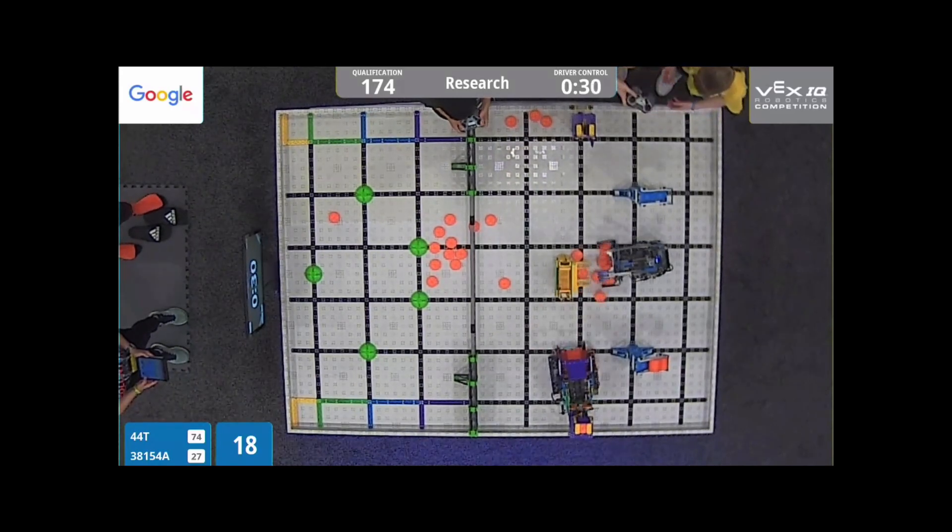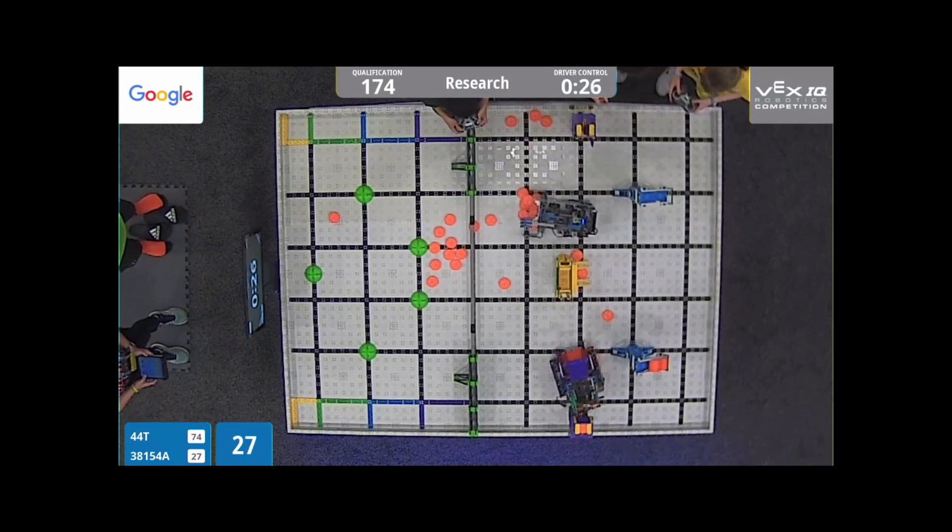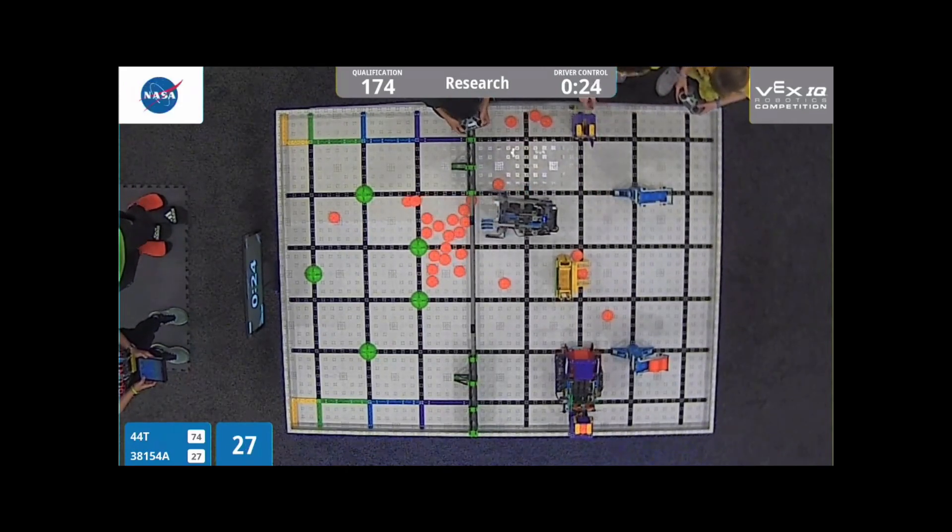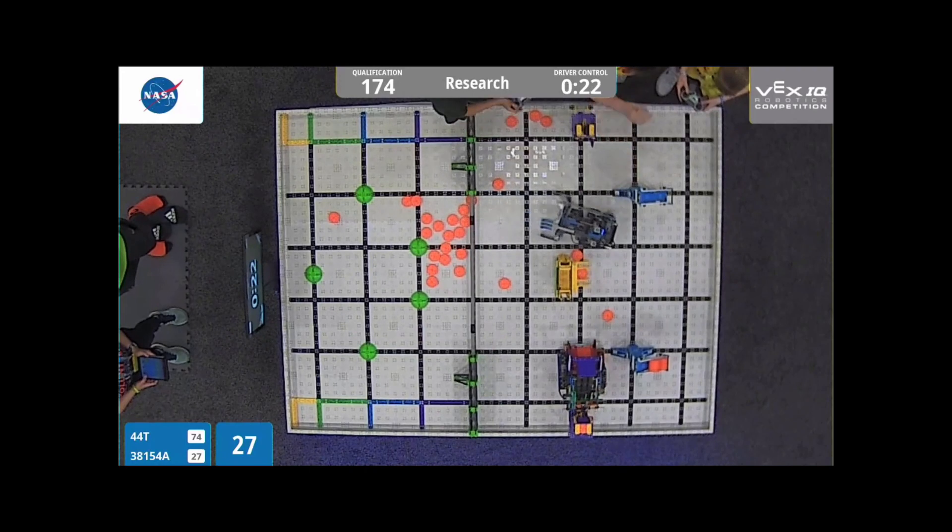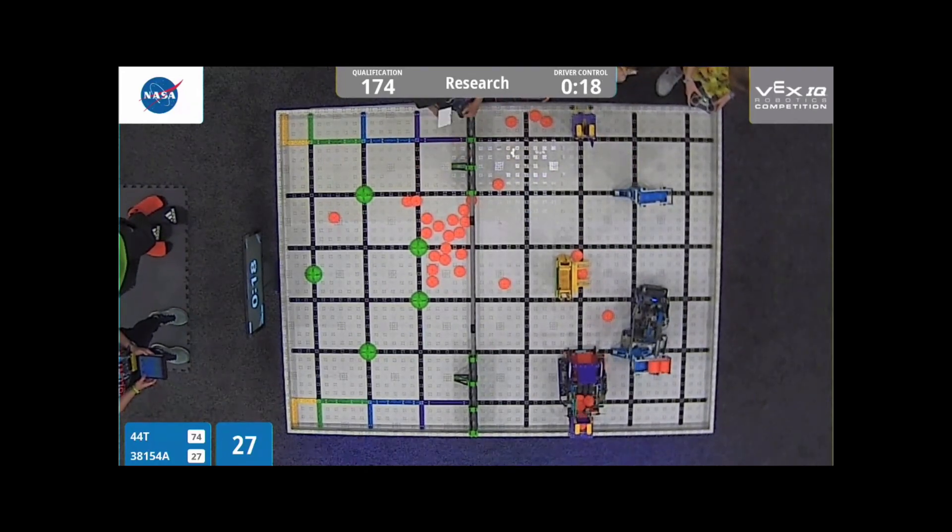All right, quickly moving on to this purple dispenser. This is where that practice comes in. Looks like most of those discs have landed in that two-point area. That's going to be two points per disc in that zone.